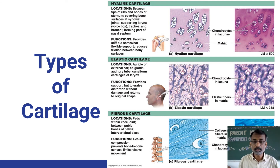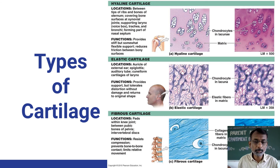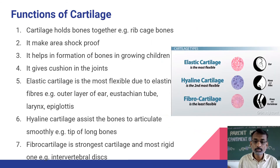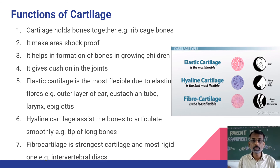Fibrous cartilage is the third type of cartilage. It is present in the pads within knee joints, between the pubic bones of the pelvis, and in the intervertebral discs. As the fibrous structure is present, it provides strong supportive pads within the knee joint and other high-stress locations. Thank you.